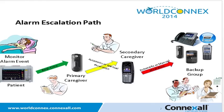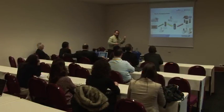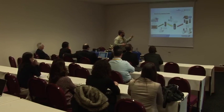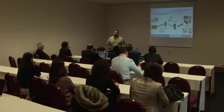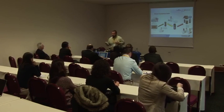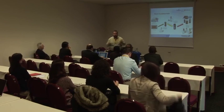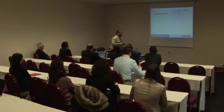If the caregiver knows in advance they will not be able to attend, they can also manually escalate, which could save precious seconds. At the secondary level, the process repeats itself — the user can manually escalate, or after that predetermined amount of time it escalates to what we call the backup level. The timings between levels are independent, so you could have 60 seconds between primary and secondary, and 30 seconds — or five or ten minutes — between secondary and backup.